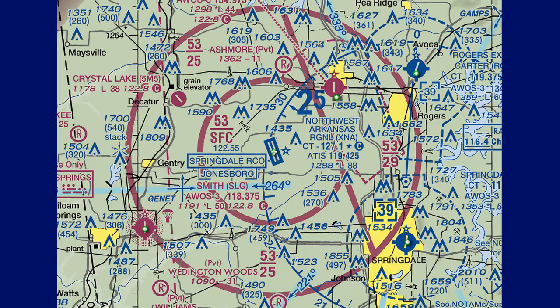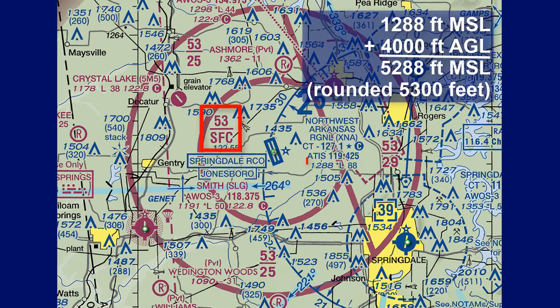Now let's look at a slightly more complex example of Class C by taking a look at Northwest Arkansas Regional Airport. Here the inner cylinder is flat on the side facing east, and goes from the surface, which on the chart is 1,288 feet MSL. By adding 4,000 feet AGL gives us 5,288 feet MSL, which gets rounded up to 5,300 feet MSL.